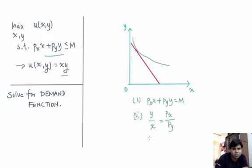Once we know that these are the two conditions that the solution must satisfy, we can just solve the system of equations to get the demand in terms of px, py, and m.